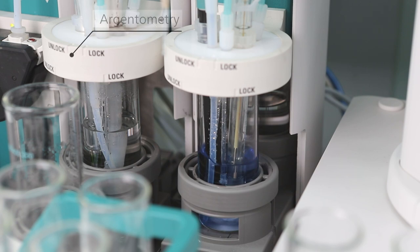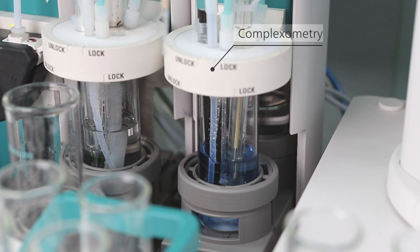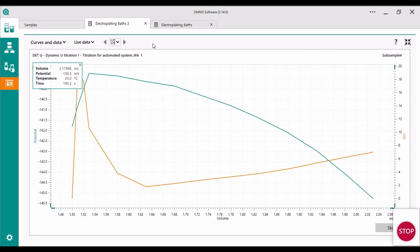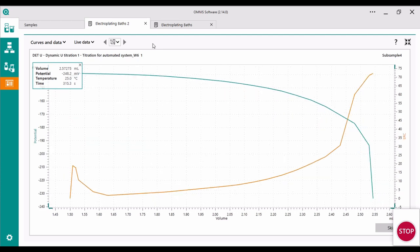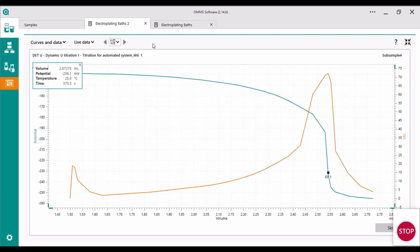The fourth titration is a complexometric nickel determination with EDTA as the titrant. Auxiliary solutions are ammonia buffer and equimolar amounts of copper sulphate and EDTA as the indicator. The used sensor is a copper iron selective electrode.